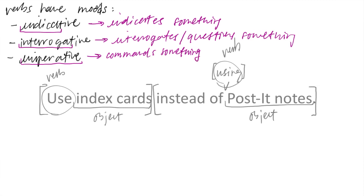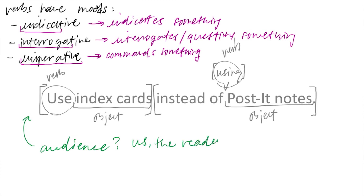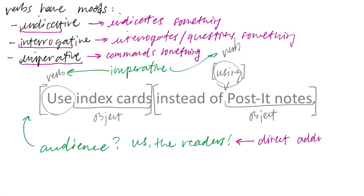So those are our three moods. As I mentioned, we now have a new mood. Whereas we've been working with the indicative mood, we now have the imperative mood. If you're not sure how to identify which type of mood a verb is in, you can ask yourself who is the audience of the sentence. If you can identify a specific audience to whom the sentence is being directed, that's a pretty good sign it's in the imperative mood. And if it's a command, obviously it's an imperative.